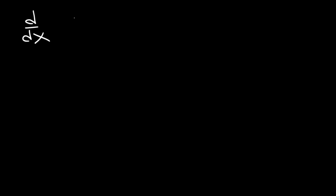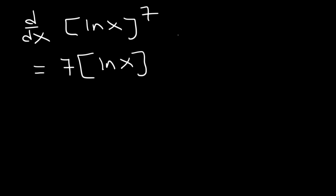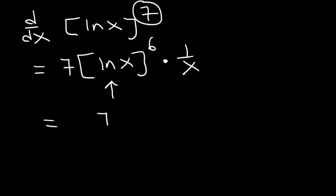What is the derivative of ln x raised to the 7th power? So this is going to be 7 — keep the inside part the same — and then subtract the exponent by 1, so 7 minus 1 is 6. Now we've got to multiply by the derivative of the inside function. The derivative of ln x is simply 1 over x. So the final answer is 7 ln x raised to the 6th power divided by x.